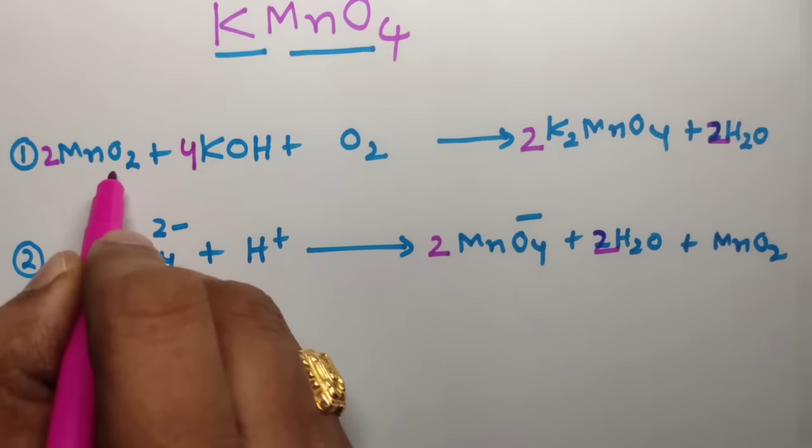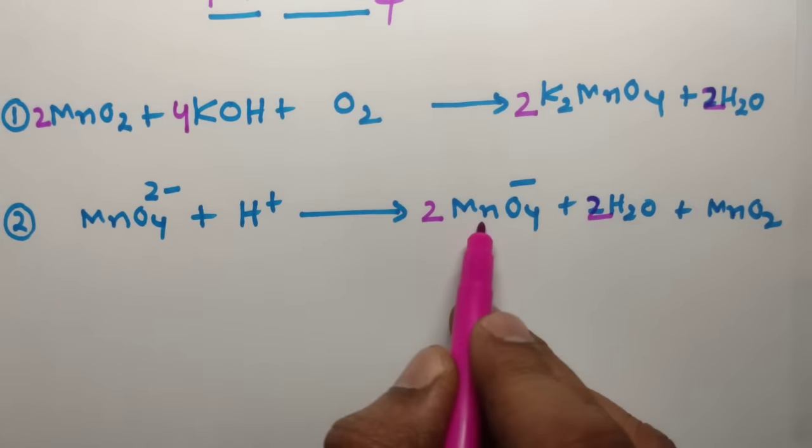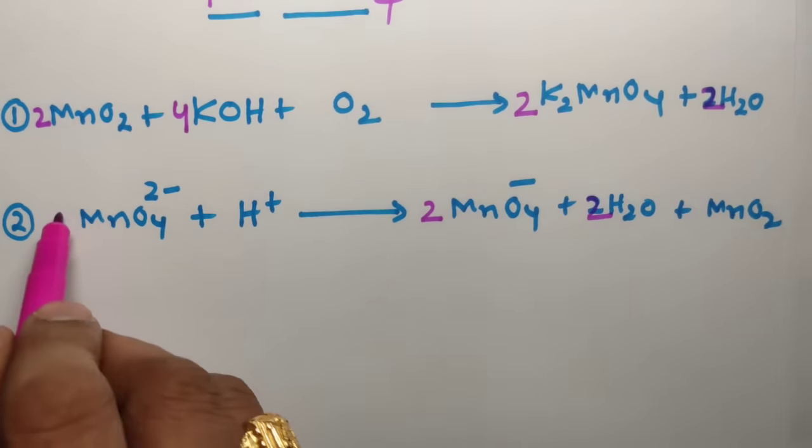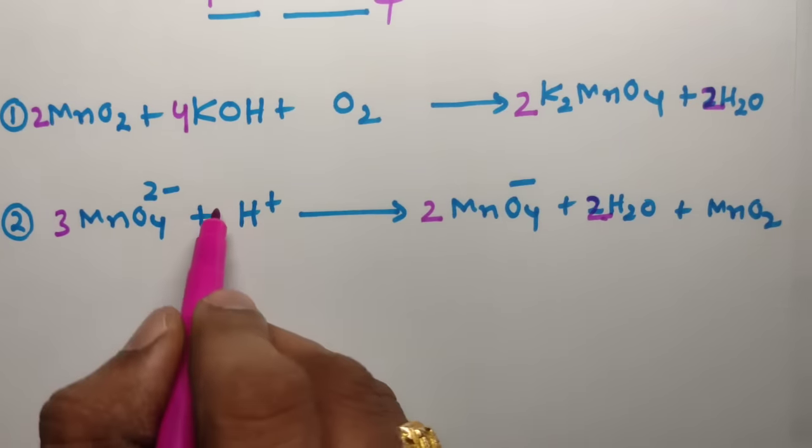And 2 manganese atoms - we have written 2 manganese atoms. In second step here, 2 manganese atoms, here 1 manganese: 2 plus 1 equals 3. And here 2 into 2 equals 4 hydrogens, that's why you can write 4.